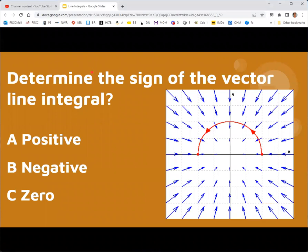All right, and this last one is zero, because you can see that the curve is always orthogonal to the vector field, which is pointed radially inward.